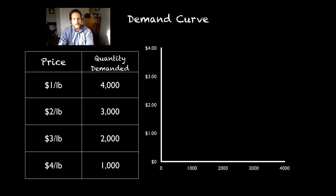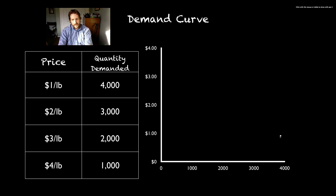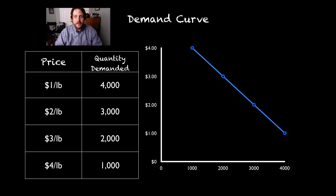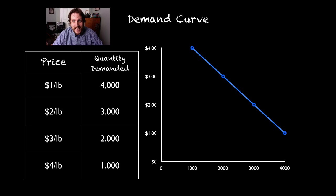You can look at this on a chart as well. At $1 per pound, a lot of Brussels sprouts are going to be bought. At $2 per pound, maybe only 3,000. At $3 per pound, only 2,000. And as Brussels sprouts get up to $4 a pound, there will only be 1,000 pounds bought. Our graph ends up looking just like that — a demand curve. In our next video, we're going to take a look at how you can combine these two supply and demand curves to look at shortages, surpluses, and equilibrium.